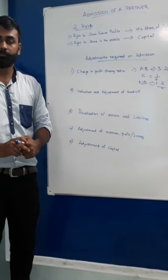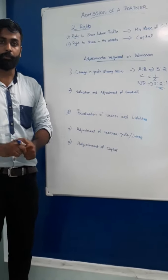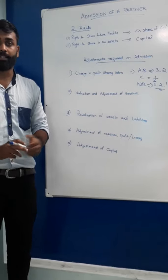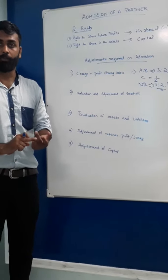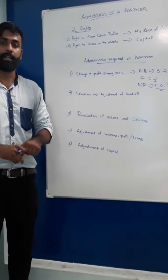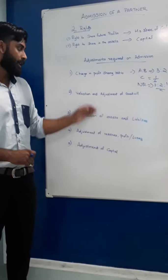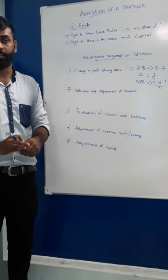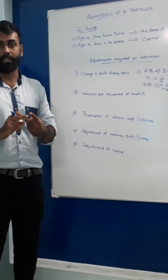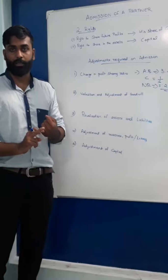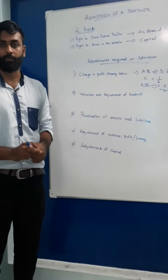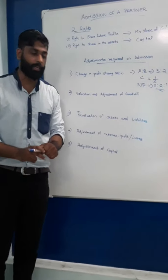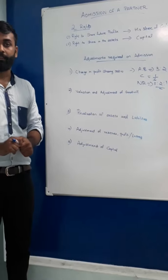The second adjustment is valuation and adjustment of goodwill. In Chapter 2, we have studied how goodwill is valued using four methods: average profit method, super profit method, capitalization of average profit, and capitalization of super profit. Adjustment of goodwill was also studied in Chapter 3 — we studied two journal entries: gaining partner's capital account debit to sacrificing partner's capital account. We can discuss these adjustments by doing problems. The third adjustment is revaluation of assets and liabilities, which we also studied in Chapter 3.